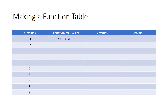For the first row I've substituted the x variable with the x value negative three. So the equation becomes negative three times negative three plus nine. When I type that into the calculator it gives me the answer 18. I take my x value negative three and my y value 18 and write it in the points column as negative three, 18.